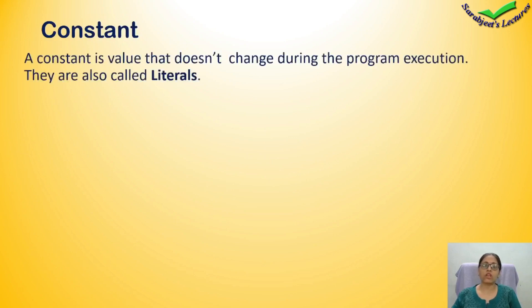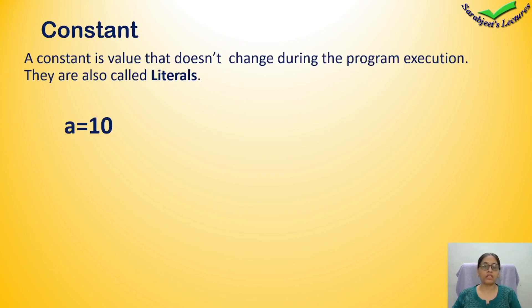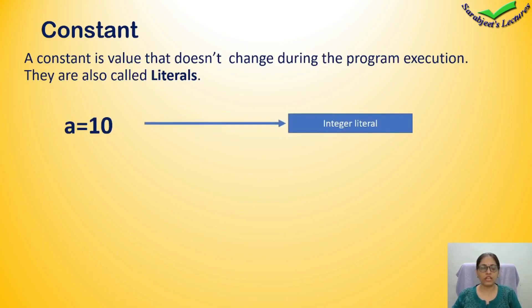Next is constant. A constant is a value that does not change during program execution. When you initialize a variable, the value inserted into it is known as a constant, also called a literal. For example, if you write A is equal to 10, then 10 is a constant — specifically an integer literal.